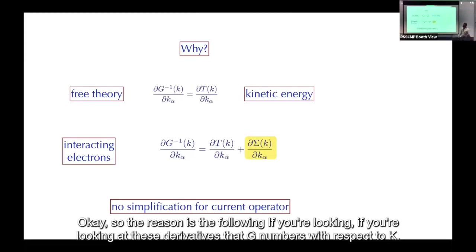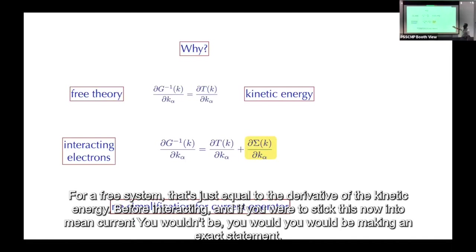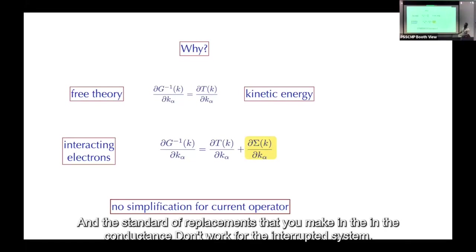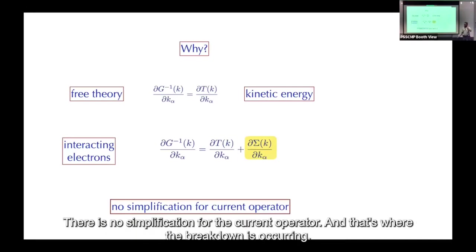The reason is: for a free system, derivatives of G^{-1} with respect to k equal derivatives of the kinetic energy. For an interacting system, this quantity has a contribution from the self-energy, so the standard replacement you make in the conductance formula doesn't work. There's no simplification of the current operator for an interacting system — that's where the breakdown occurs.